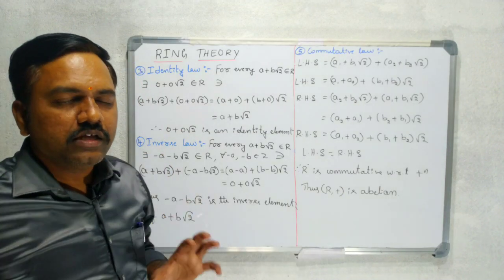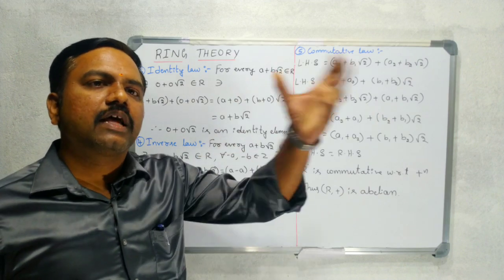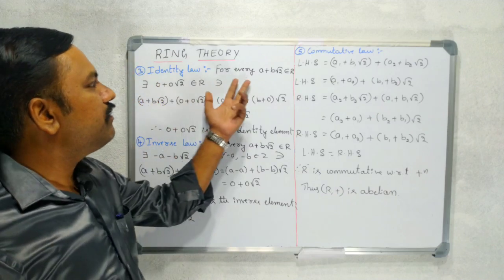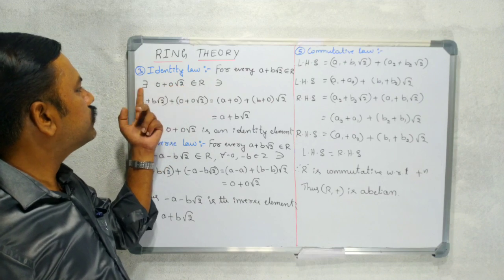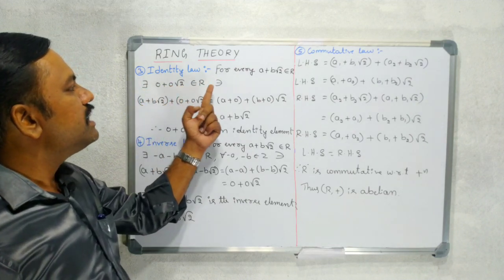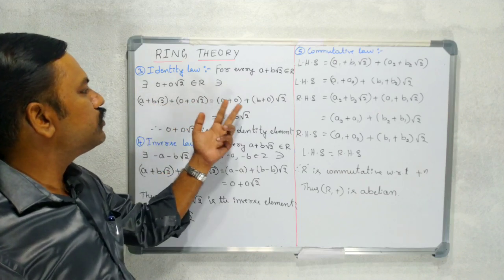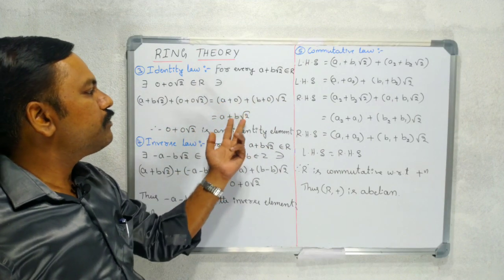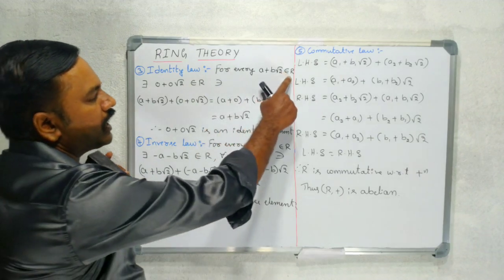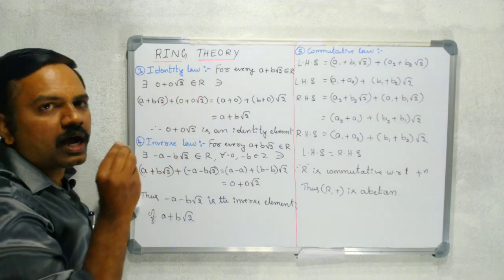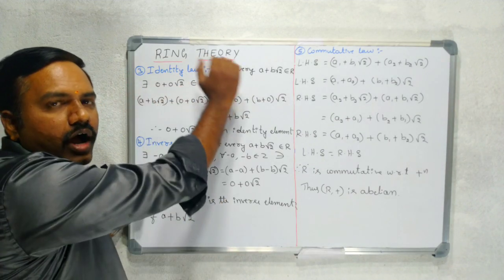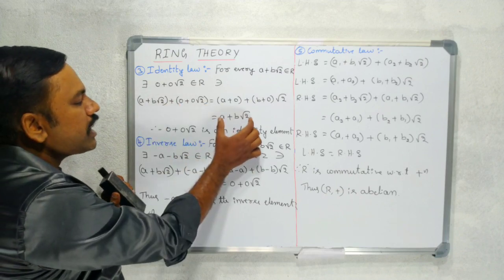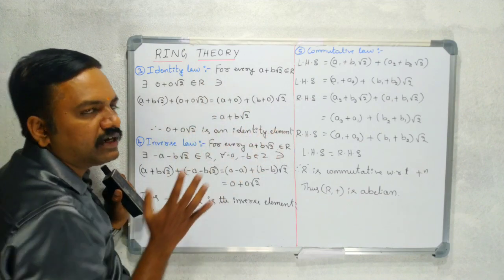The next law is the identity law. For every A plus B root 2 belonging to R, there exists 0 plus 0 root 2 belonging to R, such that (A plus B root 2) plus (0 plus 0 root 2) equals A plus 0 plus (B plus 0) root 2, which equals A plus B root 2. Therefore 0 plus 0 root 2 is the identity element, and identity law is satisfied.